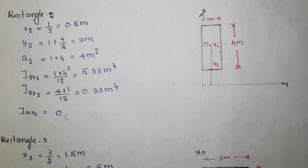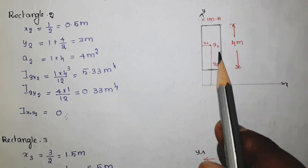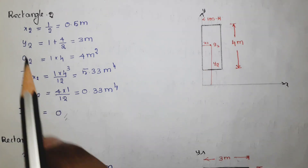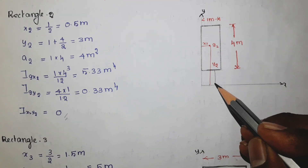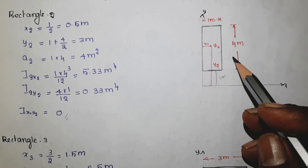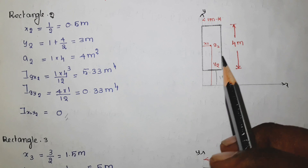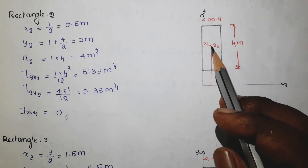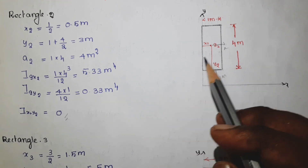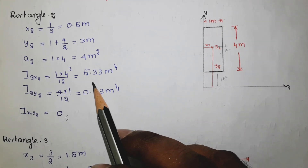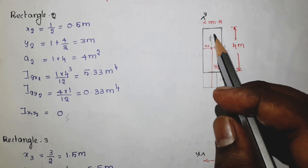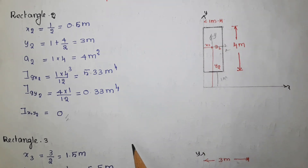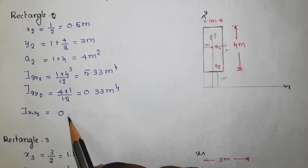For the second rectangle, finding the values for the same six variables: x2 equals 1 by 2, y2 equals 1 plus 4 by 2 — where 1 is the distance of 1 meter. Area a2 equals 1 into 4. Igx2, the moment of inertia about the axis through g2 on the x-axis, is 5.33 meter to the power 4. Igy2, the moment of inertia about the y-axis, is 0.33 meter to the power 4. The product moment of inertia is again 0.